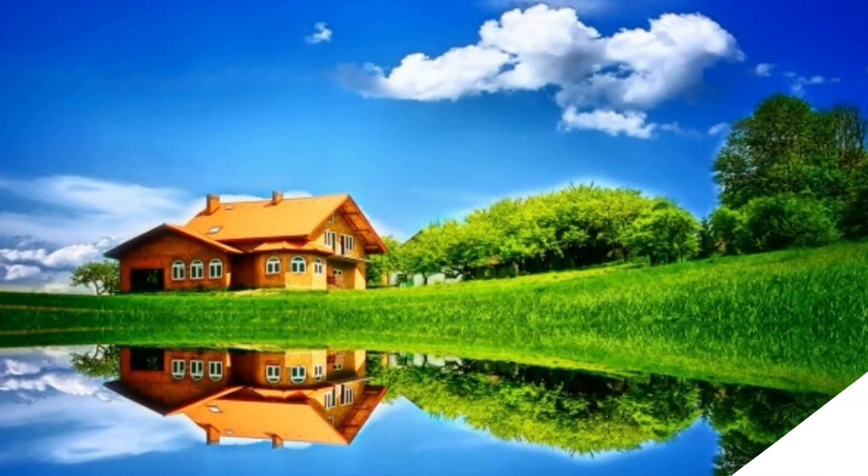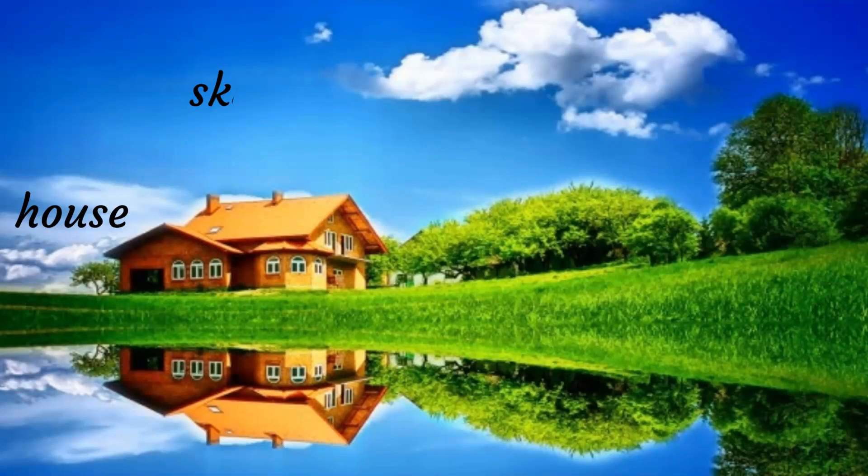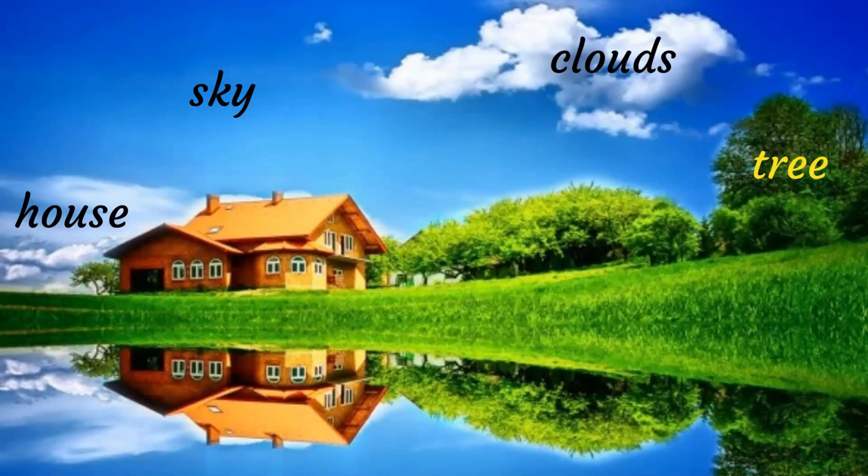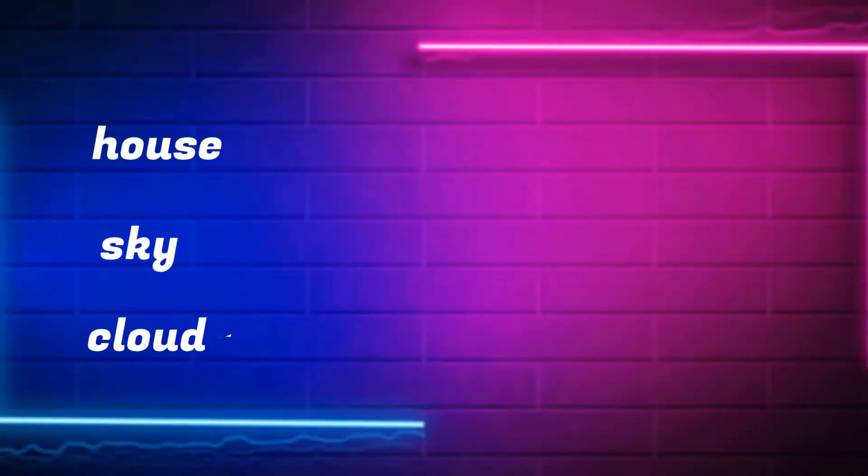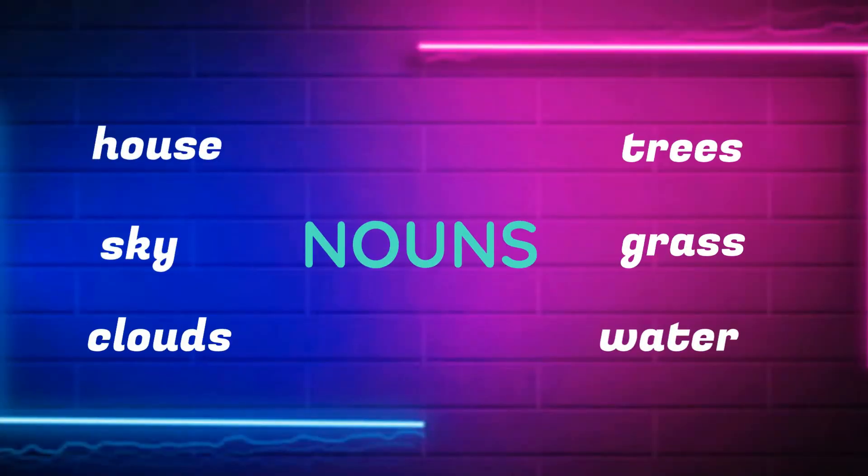Look at this picture. You can see house, sky, clouds, trees, grass and water. All these words are naming words known as nouns.